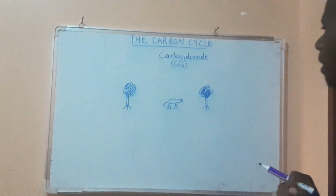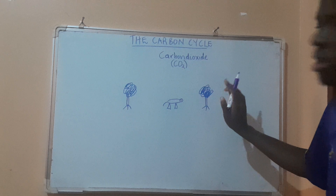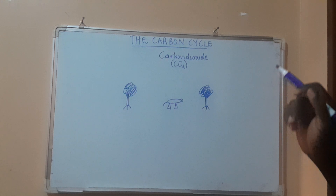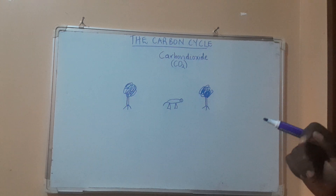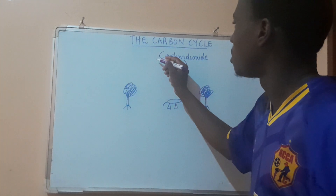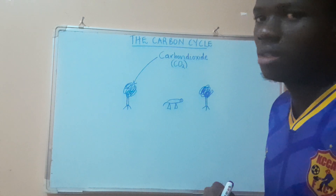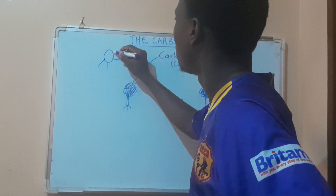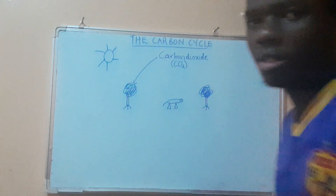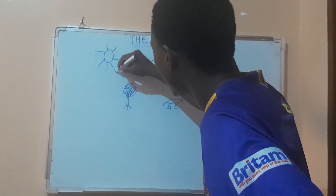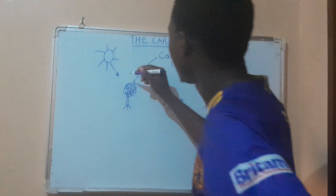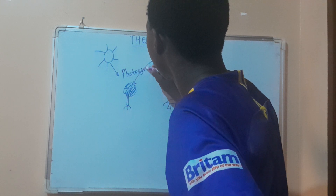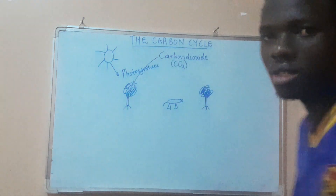This is a tree or a plant, this is an animal, and this is also a plant. In the first video we explained that carbon dioxide is used in the process of photosynthesis. This carbon dioxide is going to be utilized by this plant in the process of photosynthesis, and sunlight energy is also required.